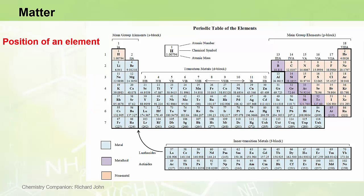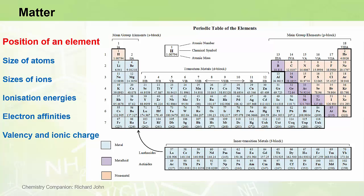So, for example, you can predict the relative size of atoms, the relative size of ions, ionization energies, electron affinities, valency and ionic charge, and therefore, most importantly, you can predict chemical formulas of compounds containing a particular element. And you can do all of that based on the position of an element in the Periodic Table.